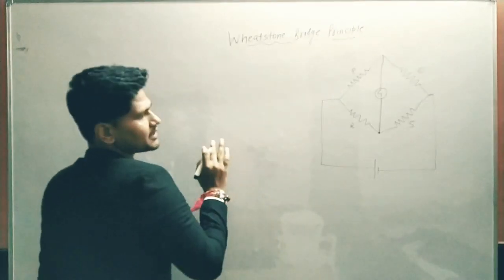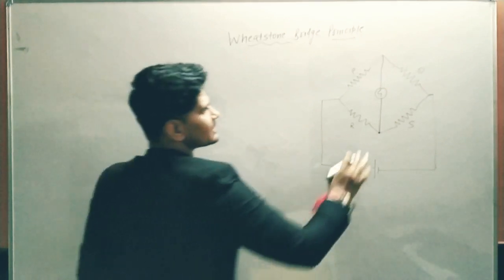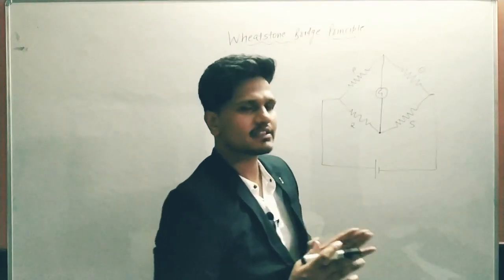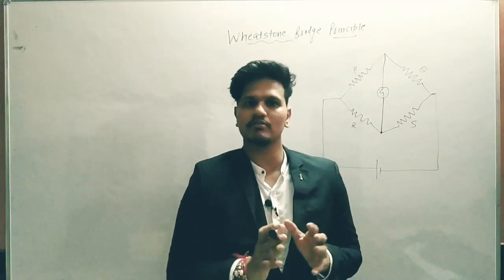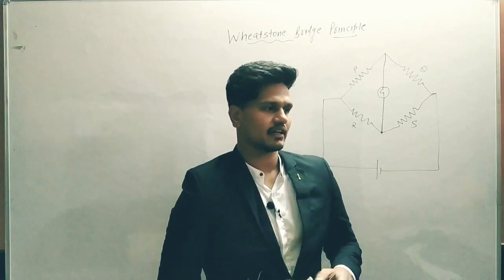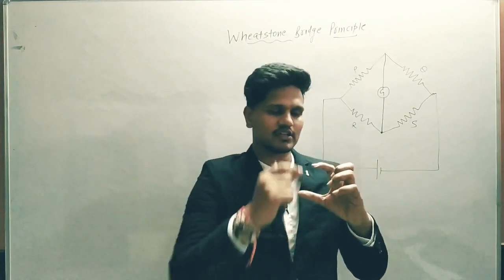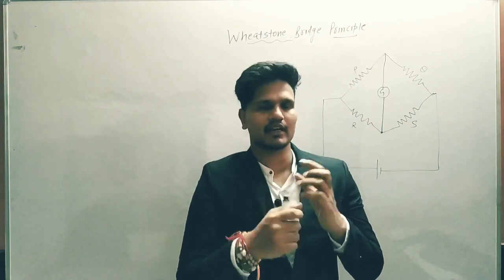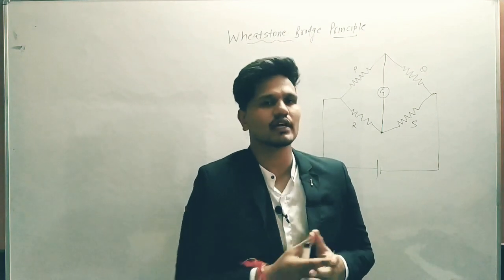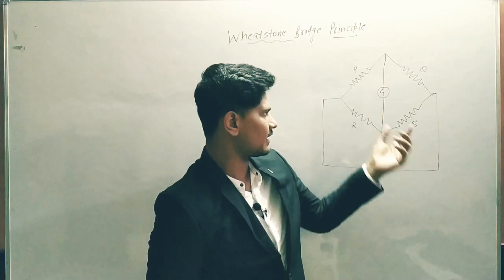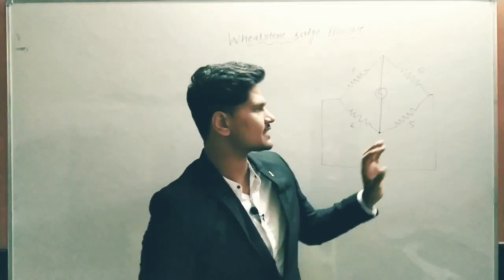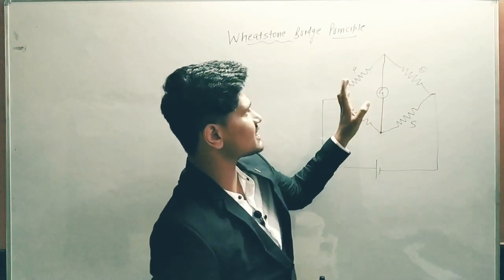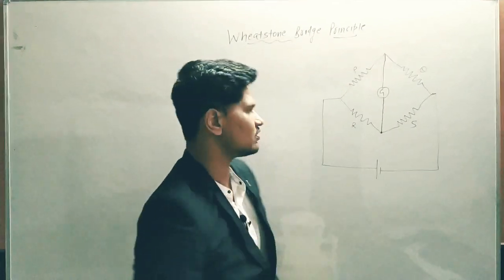The galvanometer also has some resistance because inside it there is a rectangular coil wound with copper wire, and that copper wire has some resistance. I have considered the resistance of the galvanometer as G, while the four resistors have resistances P, Q, R, and S. When the circuit is closed, some current I flows, which distributes into two paths.